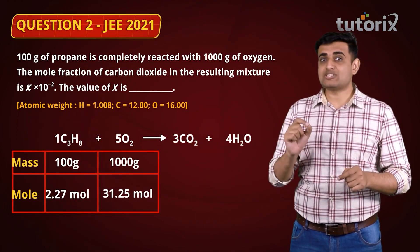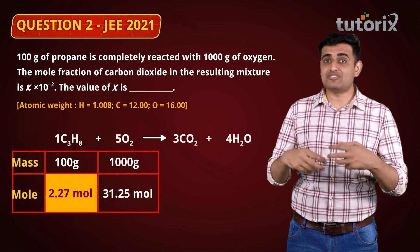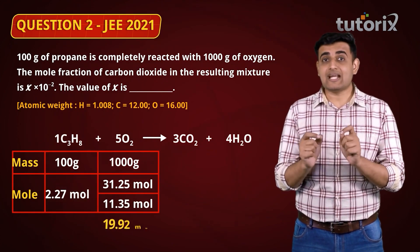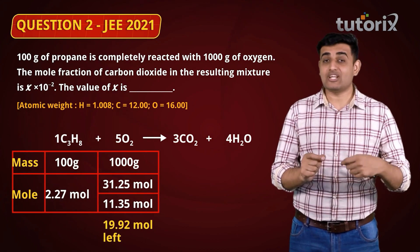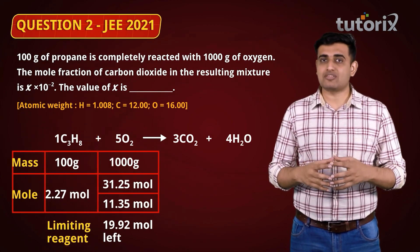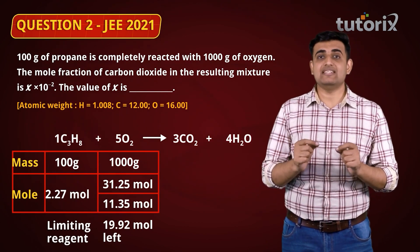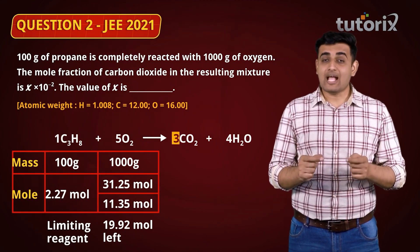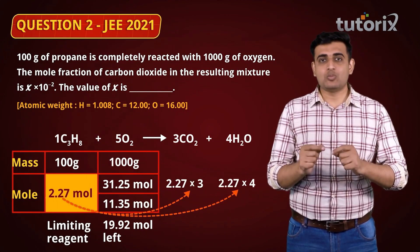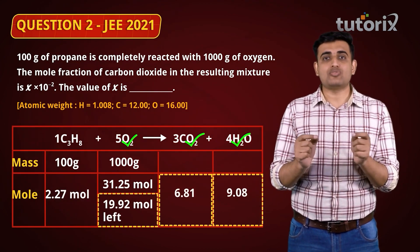From the stoichiometric coefficients, 2.27 moles of propane will require exactly 11.35 moles of oxygen gas. That means 19.92 moles of oxygen gas remains in the mixture after the reaction, making propane the limiting reagent. The limiting reagent governs the amounts of products formed. From the combustion equation, 1 mole of propane produces 3 moles of CO₂ and 4 moles of H₂O. So 2.27 moles of propane produces 6.81 moles of CO₂ and 9.08 moles of H₂O.